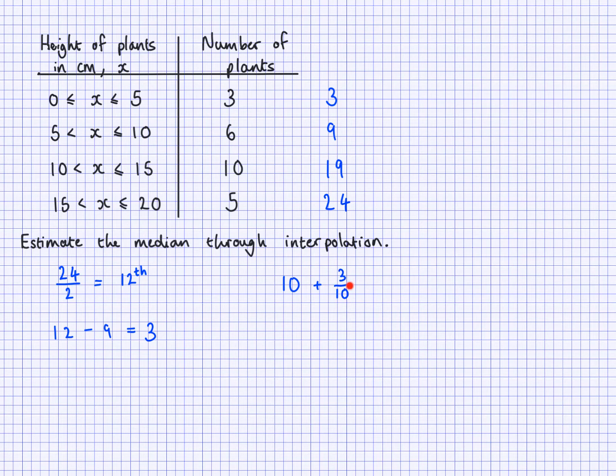And 3 over 10 of what exactly? Well, this length here is 5, or this gap here is 5. 10 to 15, there's 5 centimetres between there. So it's 3 tenths of 5 centimetres added on to this lower bound. So let's say this is going to be multiplied by whatever 15 take away 10 is, which is 5. Okay? And the 15 and the 10, they're coming from here. So let's work that out.